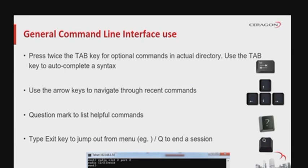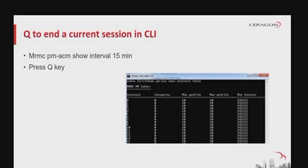Press the Tab key twice for optional commands in the current directory. Use the Tab key to auto-complete a syntax. Use the arrow keys to navigate through recent commands. Use the question mark to list helpful commands. Type 'exit' to jump out from a menu, and 'q' to end a session in progress — for example, a multi-rate multi-constellation report in 15-minute intervals is an information session that can be ended by pressing 'q'.